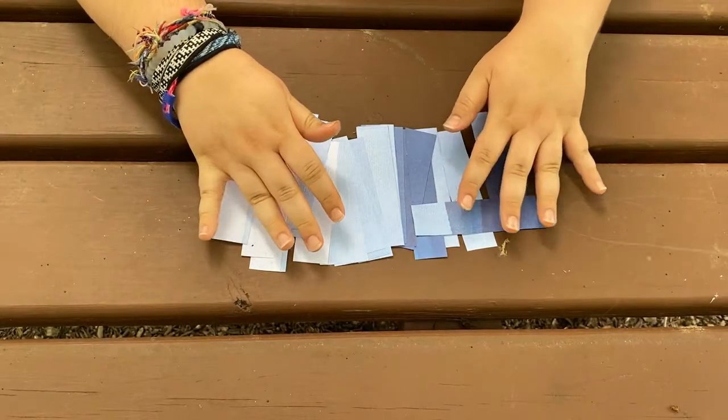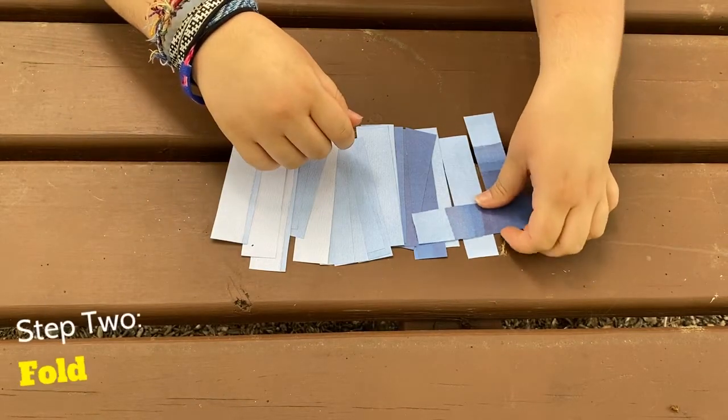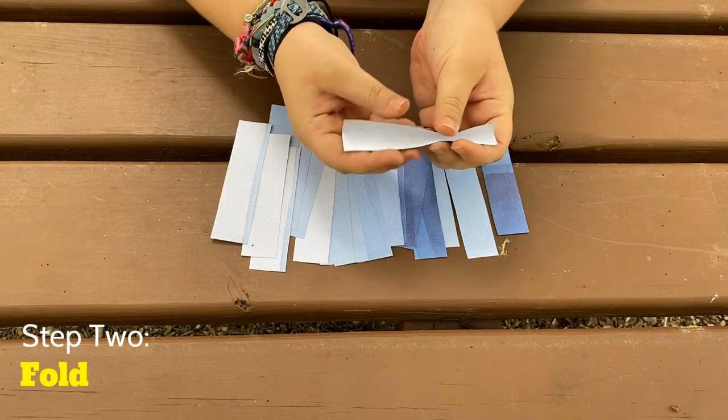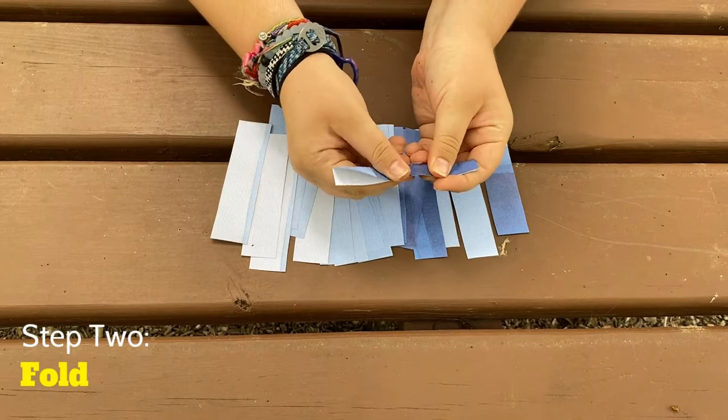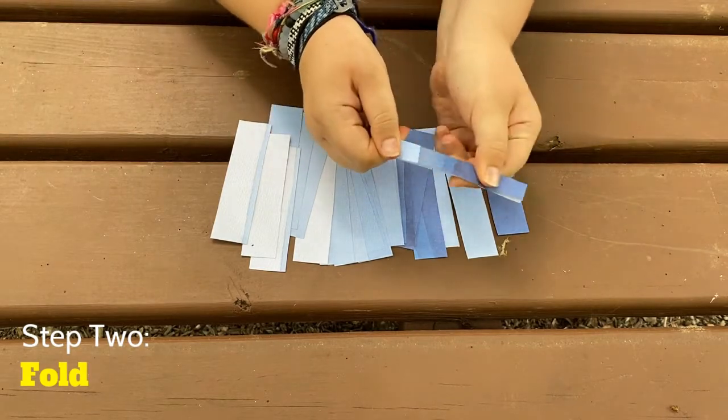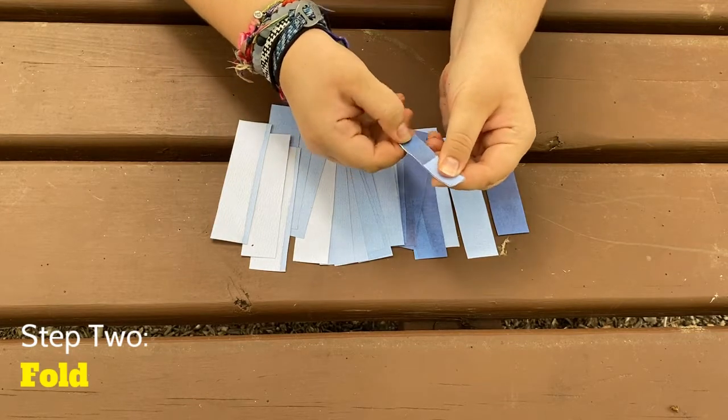Now that our paper is cut into strips, shake out your hands because the next part we get to do is fold. The first fold you want to do is fold your paper in half hot dog style, but make sure that the color is on the outside. Once you have that fold, the next fold you do is you're going to fold your paper in half hamburger style, like that.